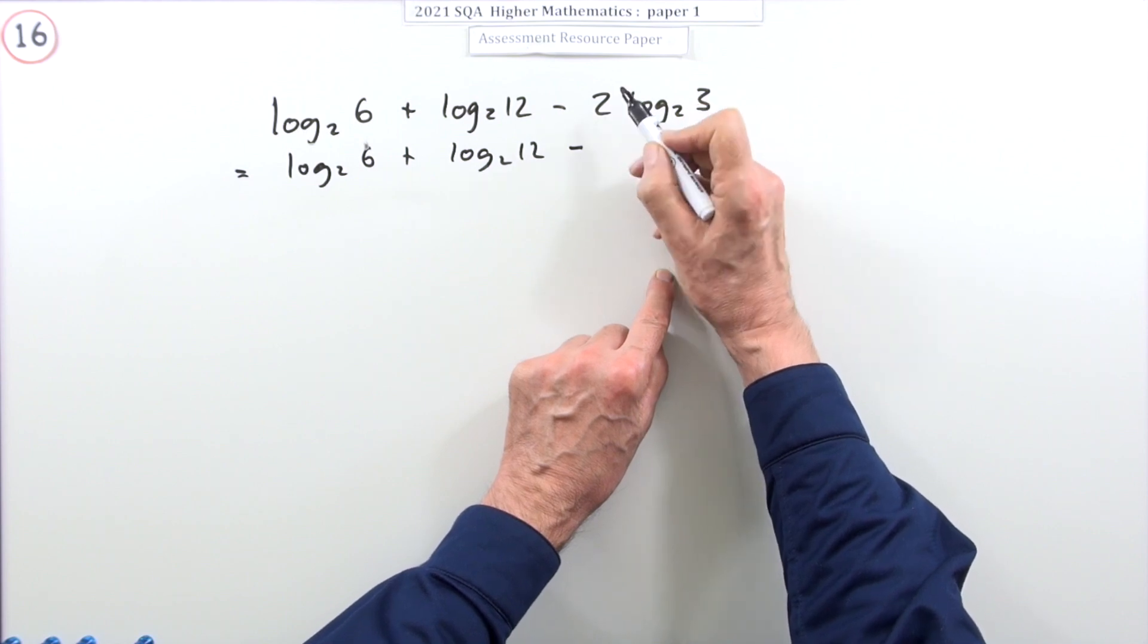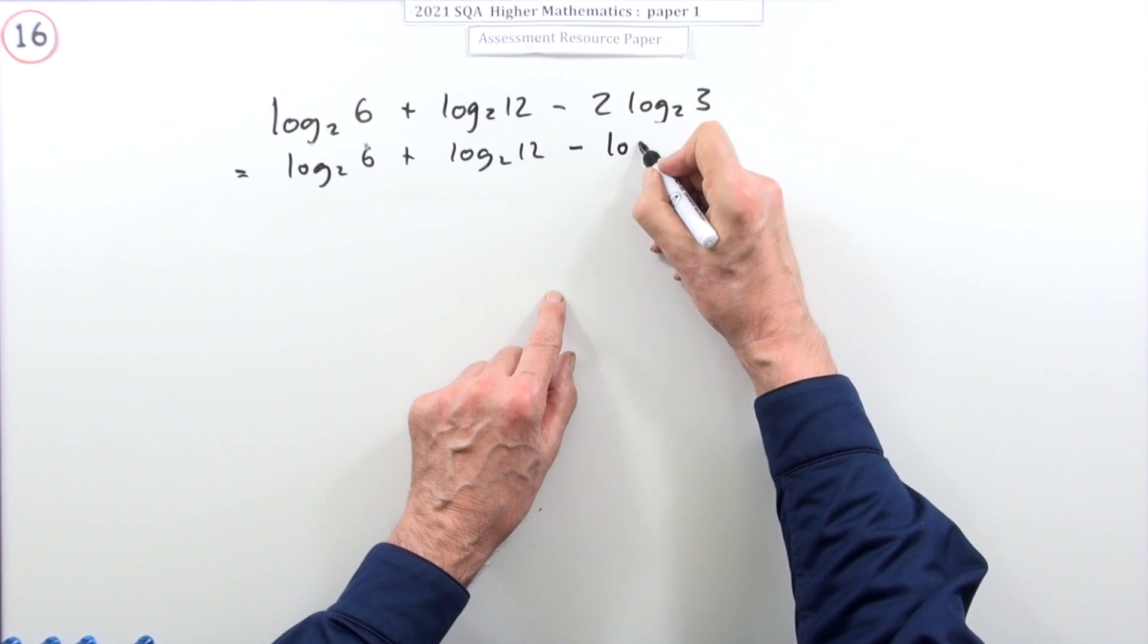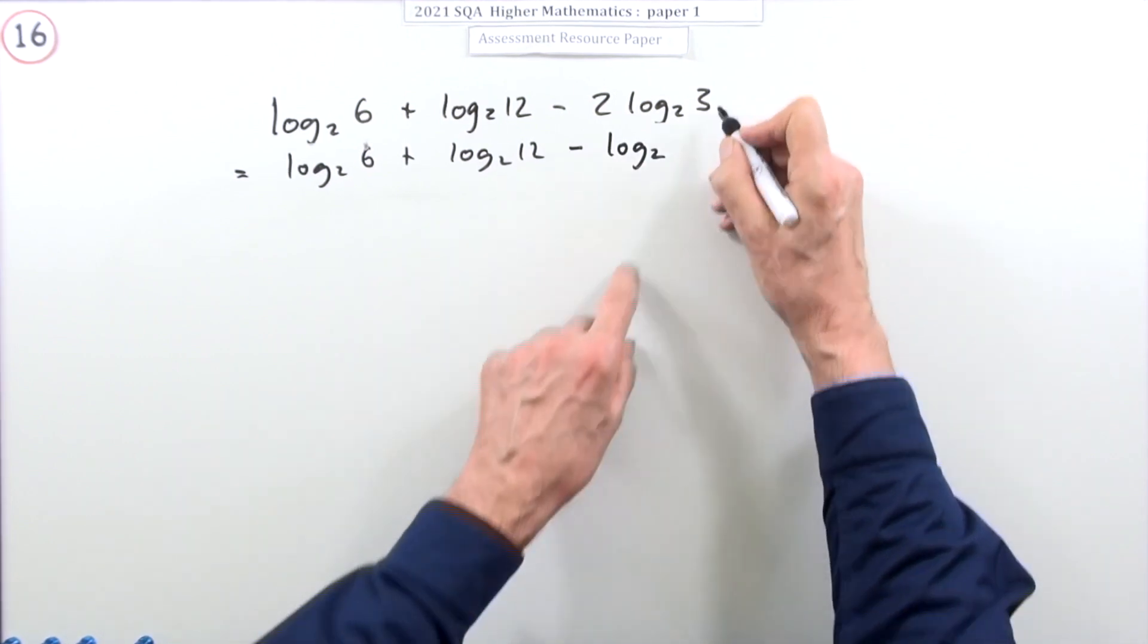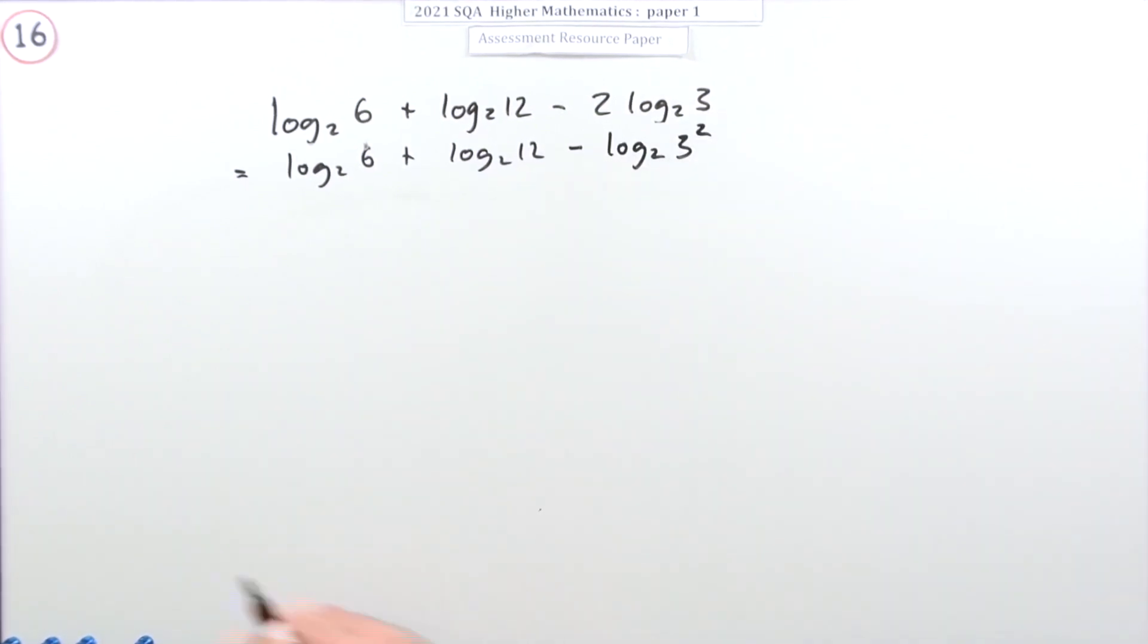So I could rewrite that as log base 2 of 3 to the power 2. So there's a mark for knowing that particular law. But I still don't know what log base 2 of 9 is. What power of 2 is 9? I don't know.